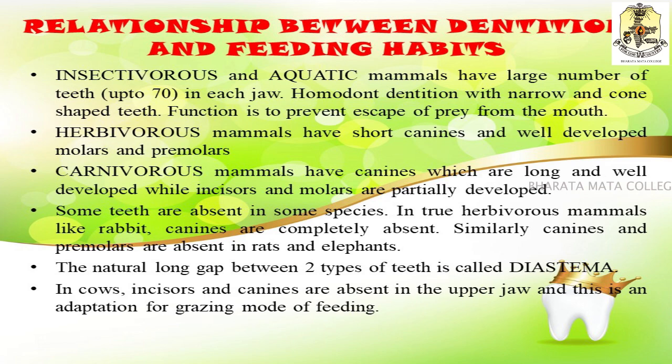Coming to the relationship between dentition and feeding habits: insectivorous and aquatic mammals have a large number of teeth — up to 70 in each jaw — known as homodont dentition, with narrow cone-shaped teeth throughout the mouth to prevent escape of food. Herbivorous mammals have short canines and well-developed molars and premolars for mastication. Carnivorous mammals have long and well-developed canines while incisors and molars are partially developed. In true herbivorous mammals like rabbits, the canines are completely absent. Similarly, canines and premolars are absent in rats and elephants.